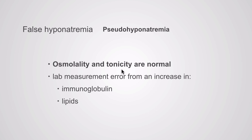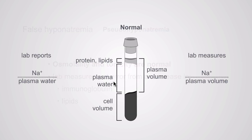In pseudohyponatremia, the osmolality and tonicity are normal. The reason you get hyponatremia in the lab is just a lab measurement error — a problem with the instrument used to measure sodium. These lab instruments report sodium content divided by plasma water, but they actually measure sodium content divided by plasma volume. Normally these are very similar, off by about 10%, so an adjustment factor is applied and the result is reported as normal.